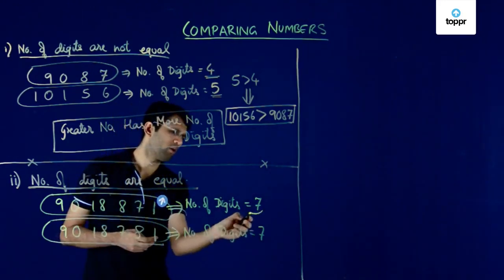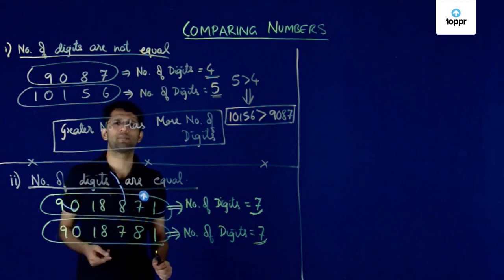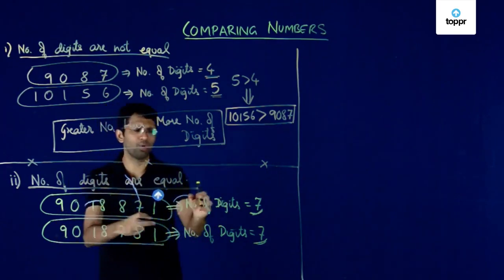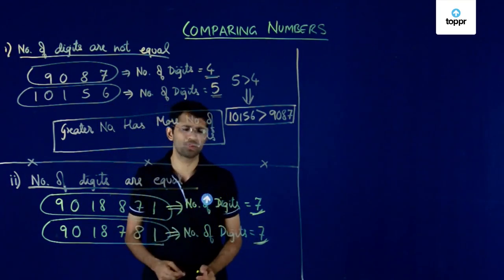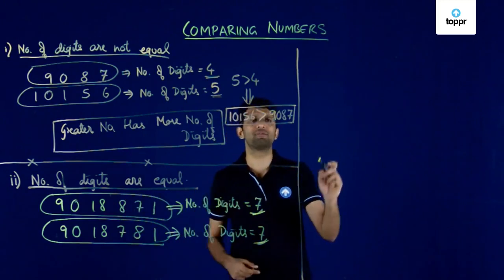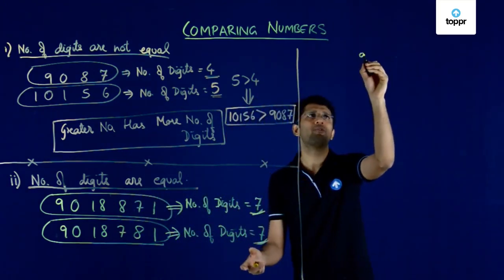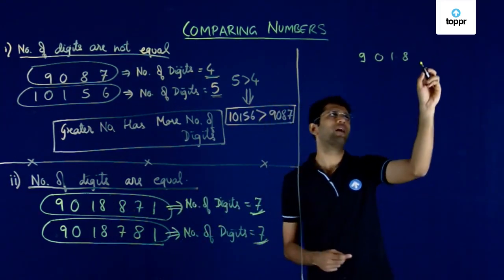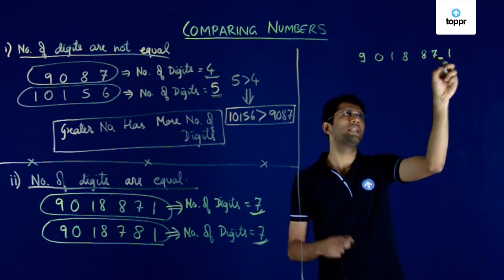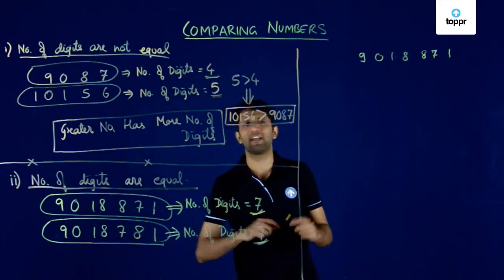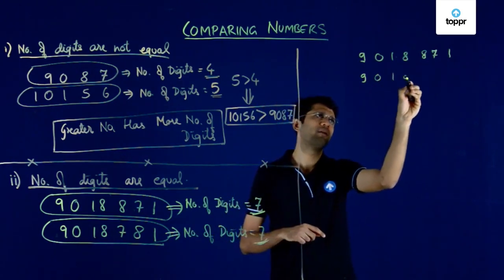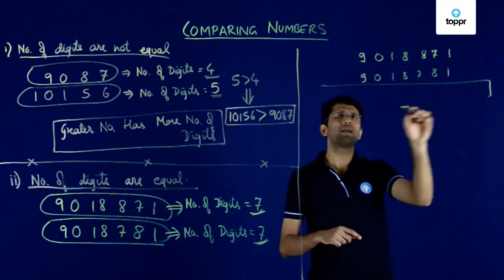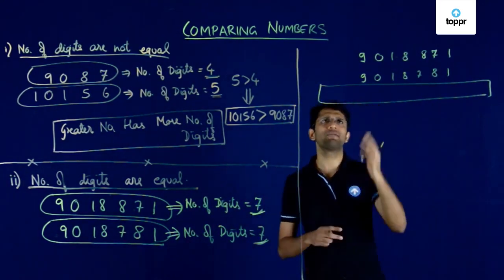Because the number of digits are the same, we cannot apply the first test. In this case, both numbers have equal number of digits, so to compare them we write the two numbers one below the other. I write the first number 9018871 and exactly below it I write the second number 9018781. Then I start comparing each of the individual digits starting from the leftmost digit.